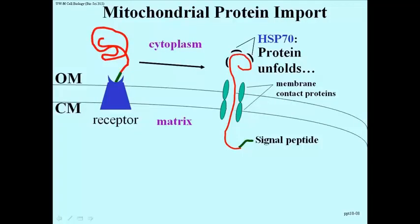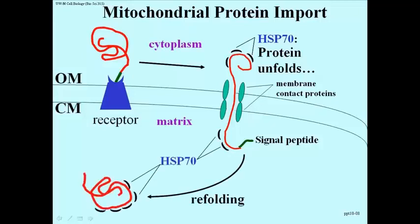So, this cytosolic protein destined for the matrix of the mitochondrion is being extruded through these membrane contact pore proteins. Once the polypeptide has gotten part of the way in, heat shock proteins Hsp70—which by the way stands for the molecular weight 70,000 Daltons—present both in the cytoplasm and in the matrix, can associate with the polypeptide as it emerges in the matrix and begins to help it refold into its functional shape.